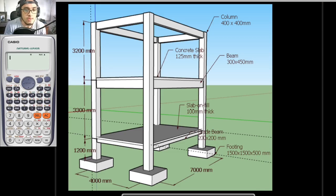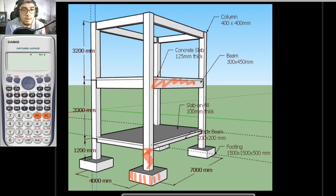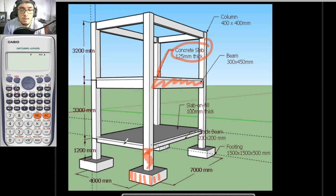For you to understand our lesson better, it is better for us to have an illustrative example. In our illustrative example, I would be solving for the formworks of this footing, this column, this beam, and for this slab, which is hidden from our view. Using that knowledge, it is better for you to solve for the other members as well using the knowledge that you would be gaining in this pre-recorded lecture.